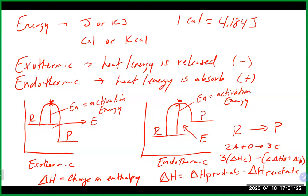These are delta H of formation values you look up in a table. Make sure you find the substance in the correct phase — water is a very common mistake. Things in their standard state, like metals or O₂, N₂, Cl₂ gas, have a delta H value of zero. You add up all products minus all reactants to get delta H for the reaction. A negative delta H is exothermic; a positive value is endothermic.